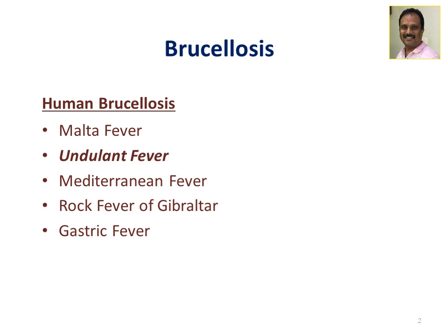Human brucellosis is also known as Malta fever, undulant fever, Mediterranean fever, rock fever of Gibraltar, or gastric fever. It mainly occurs in Malta, so it's known as Malta fever. Because of the wavy pattern of the fever it's also known as undulant fever, and because many cases were seen in the Mediterranean area it's also known as Mediterranean fever.